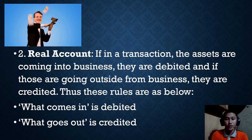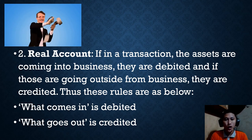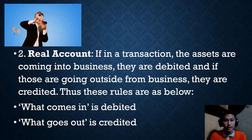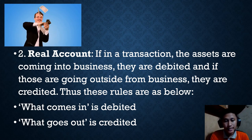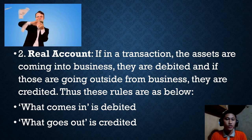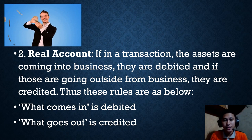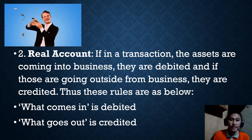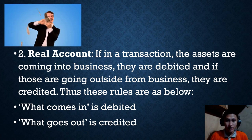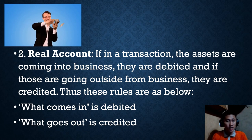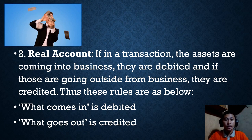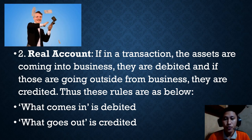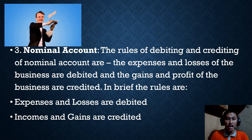For real accounts: if assets are coming into the business, they are debited; if they are going outside from the business, they are credited. The rules are: what comes in is debited, what goes out is credited. Since real accounts refer to assets owned by the business, when the company purchases assets they come into the company and are debited; if assets go outside the business, that is credited.